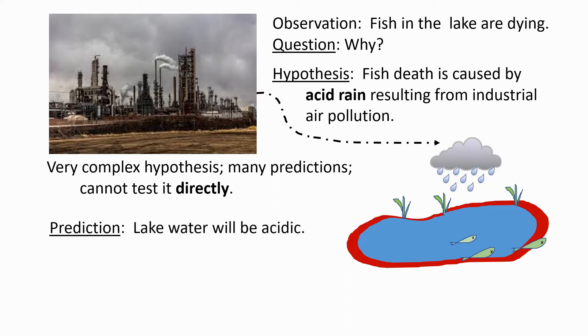However, if you break it down, you realize that there are single predictions that you can test. For example, in this case, the prediction would be that the lake water will be acidic, and this you can test directly by getting a pH meter and a sample of the lake water and measuring the pH of the water.